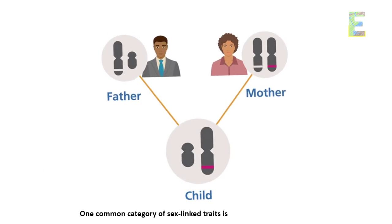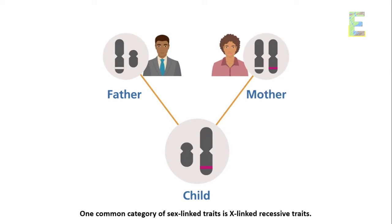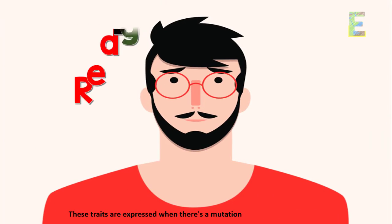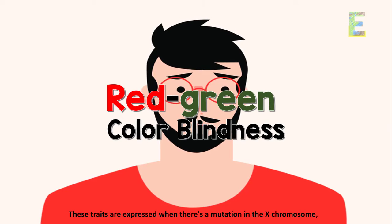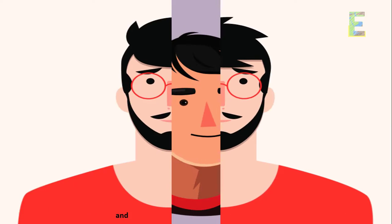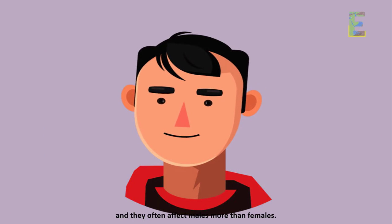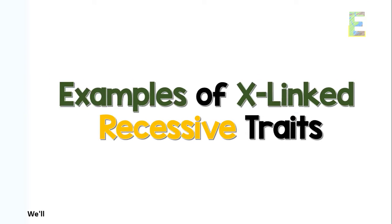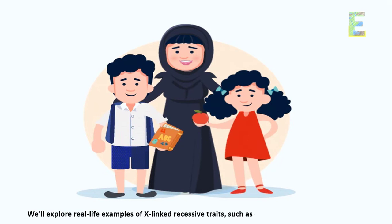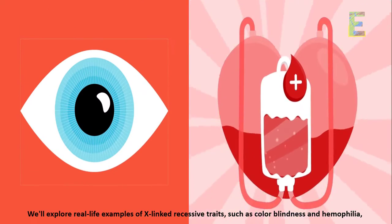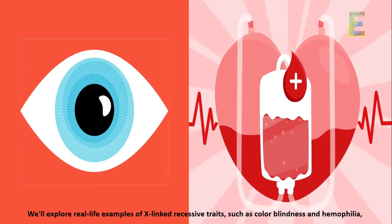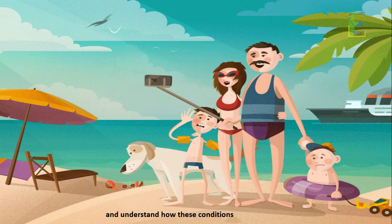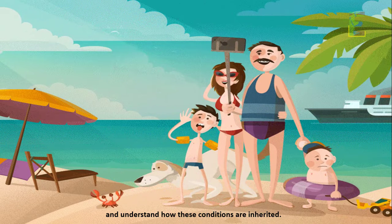One common category of sex-linked traits is X-linked recessive traits. These traits are expressed when there's a mutation in the X chromosome, and they often affect males more than females. We'll explore real-life examples of X-linked recessive traits, such as color-blindness and hemophilia, and understand how these conditions are inherited.